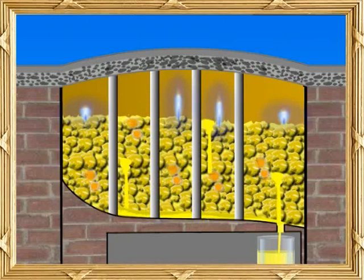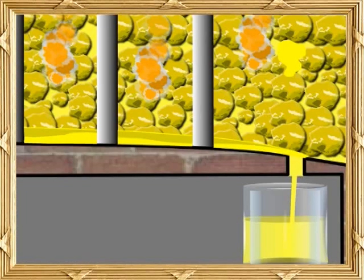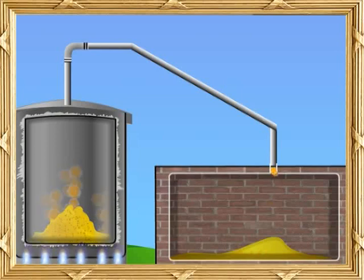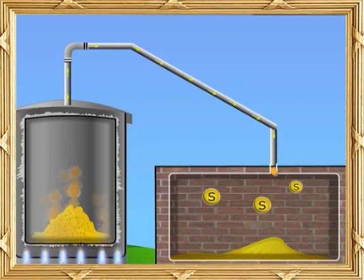The sulfur burns with a blue flame, but notice that only a small portion burns — the rest of it melts. The melted sulfur flows over the sloping surface and can be collected through the tap. The sulfur obtained this way is not pure, so to purify it, it is taken in large iron retorts and heated. The molten sulfur boils, the vapors are sent to a brick chamber and allowed to cool, where it condenses into yellow sulfur powder.